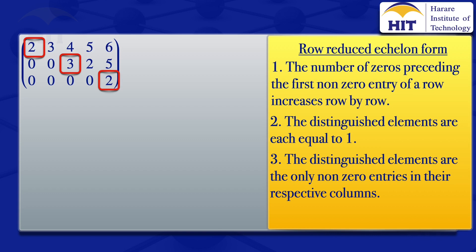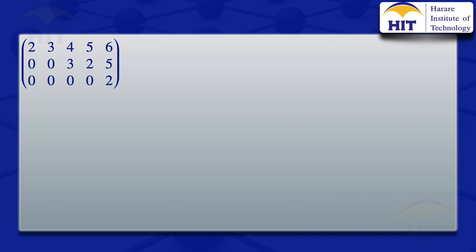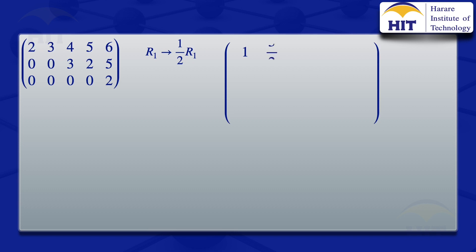This matrix is already satisfying condition number 1. What we need to do is make those highlighted elements equal to 1 and make them the only non-zero elements in their columns. For the first row, the distinguished element is 2, so we divide by 2 using the elementary row operation R1 → (1/2)R1. This gives us: 2/2 = 1, 3/2, 4/2 = 2, 5/2, 6/2 = 3.